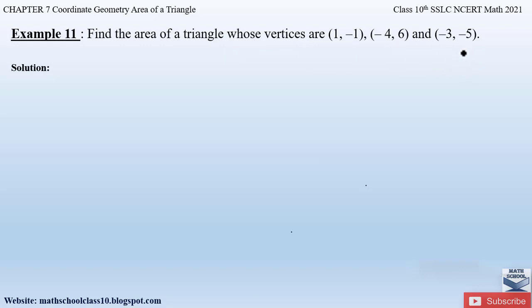So let us first draw a triangle and name it as A, B, and C. Since we have to find out the area of this triangle whose vertices are given, let us take point A as (1, -1), point B as (-4, 6), and point C as (-3, -5).